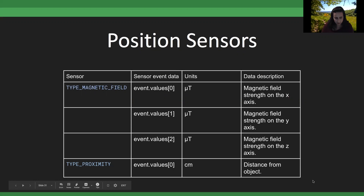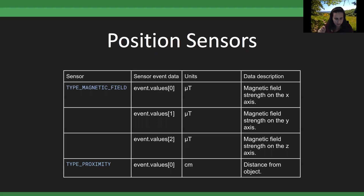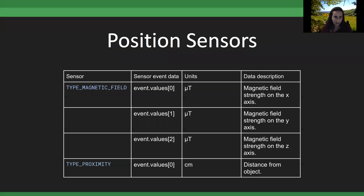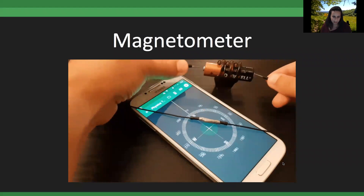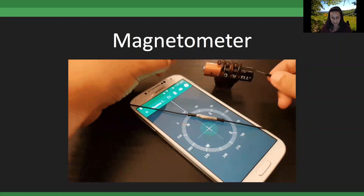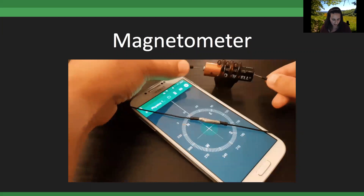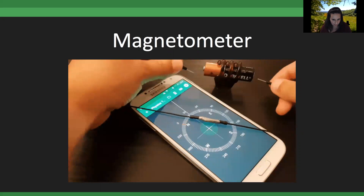For position sensors, we have the magnetometer and the proximity sensor. The magnetometer is considered a position sensor because of its utility with things like Google Maps — it's essentially the compass, measured in three dimensions in microteslas. The proximity sensor, typically near the top of the phone, works via an infrared LED and a detector looking for reflected IR light — that's what turns your screen off when you hold the phone to your ear during a call. We also show the Oersted effect demo: a direct current through a wire producing a magnetic field.